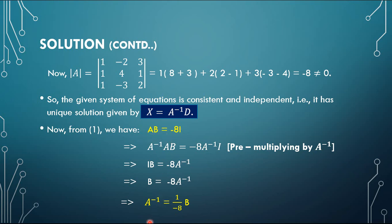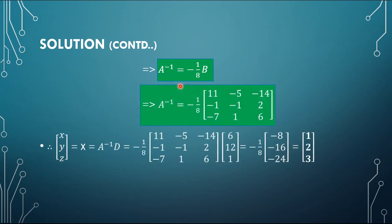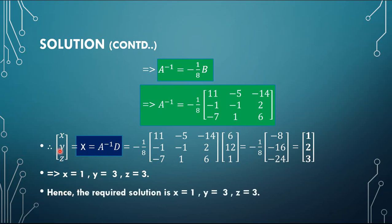So A inverse equals minus 1/8 times B. Putting the value of matrix B, we get A inverse equals minus 1/8·B. Now X equals A inverse·D — put the value of A inverse, multiply A inverse into D, and you get the values. By equality of two matrices: x equals 1, y equals 2 (note: misprinted in the video but it must be y equals 2), and z equals 3. So the answer is x=1, y=2, z=3.